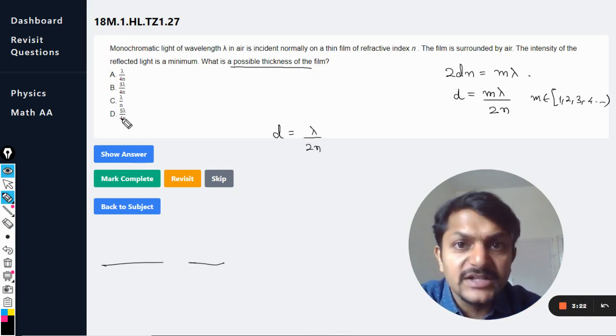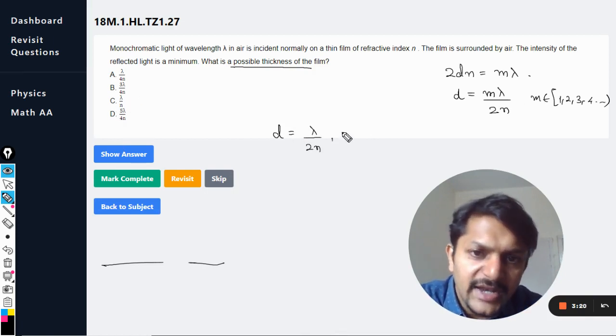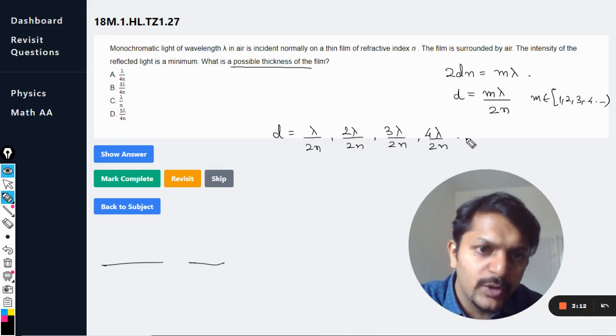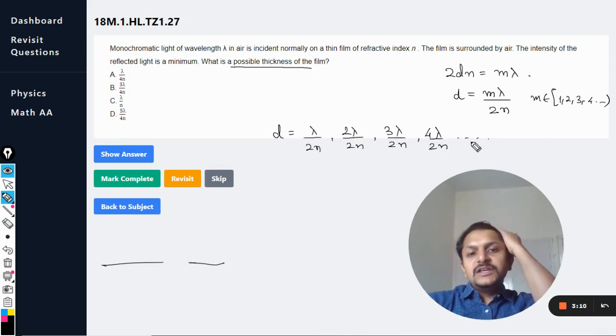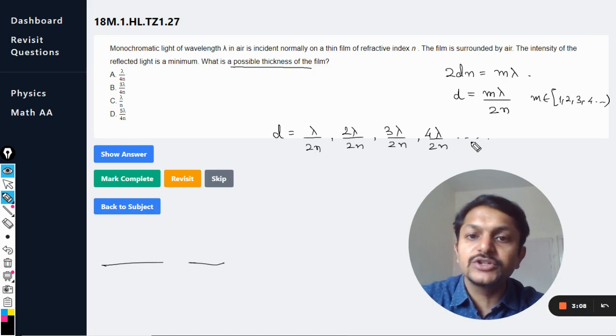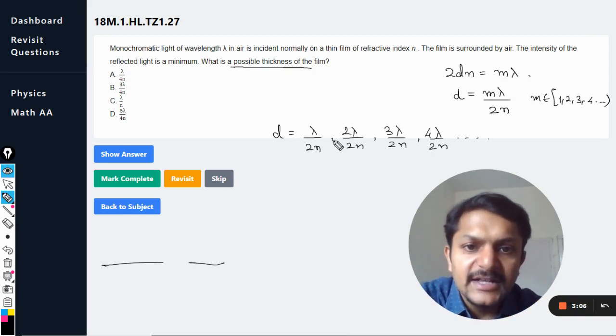The next option is 2 lambda divided by 2n. The next will be 3 lambda divided by 2n, and then it will be 4 lambda divided by 2n, likewise. So we have to see which option is available there because he's talking about the possible thicknesses.